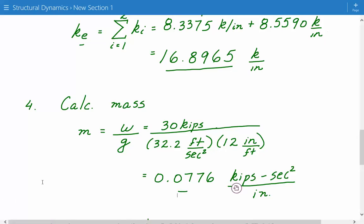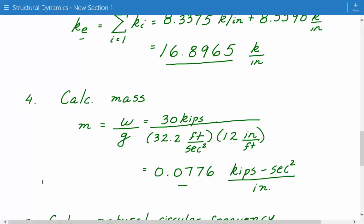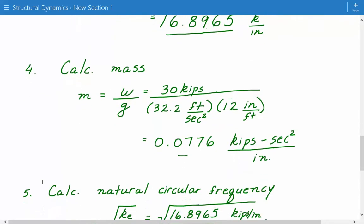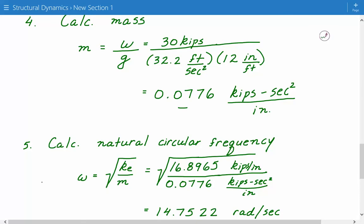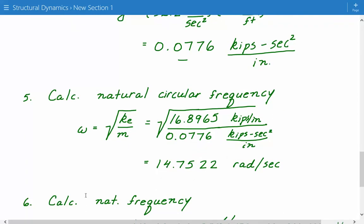So we've calculated our mass. We've calculated our equivalent stiffness. So now what remains is now we can easily calculate the circular natural frequency, omega. And that's equal to the square root of your equivalent stiffness, divided by the mass. So we just plug in the number, 16.8965, divided by 0.0776. And this gives us 14.7522 radians per second.